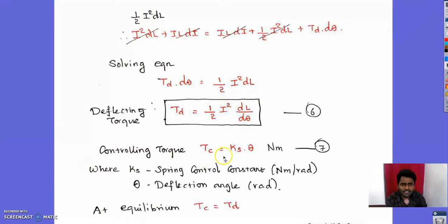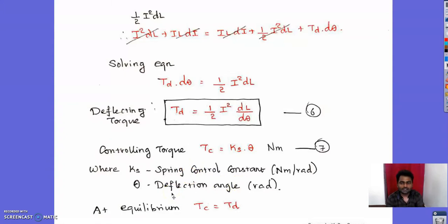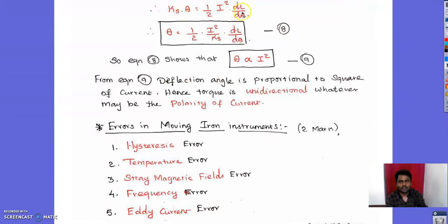The controlling torque Tc is produced by the spring, giving Tc = Ks·θ, where Ks is the spring control constant and θ is the deflection angle. At equilibrium, when the pointer comes to rest, controlling torque equals deflecting torque: Ks·θ = ½·I²·(dL/dθ). Therefore, θ = (I²)/(2·Ks) · (dL/dθ), showing that θ is directly proportional to I².